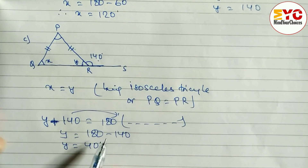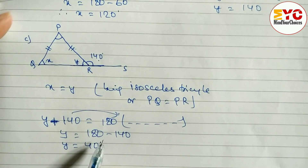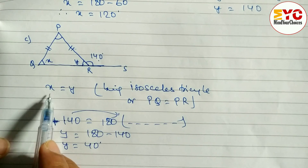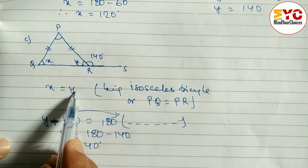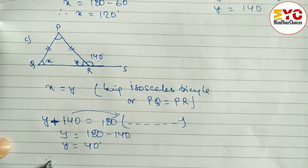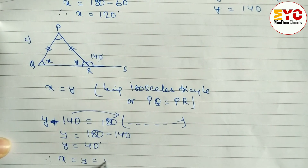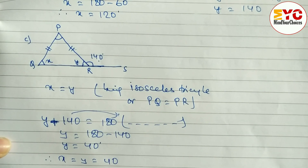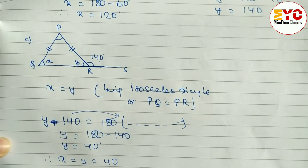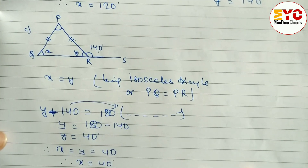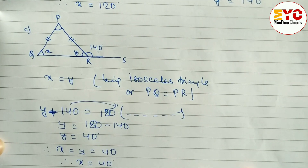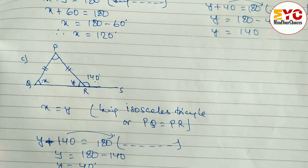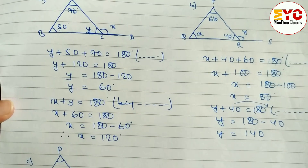Now what is the value of X? We already wrote X is equal to Y, therefore X is equal to Y is equal to 40, so X is equal to 40 degrees. The value of X is equal to 40 and the value of Y is also 40 degrees.